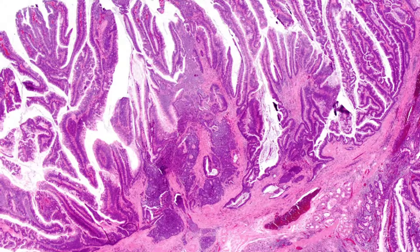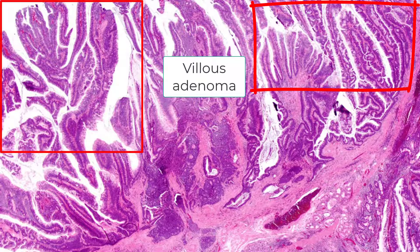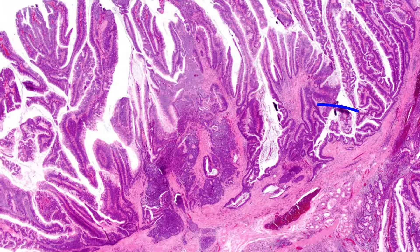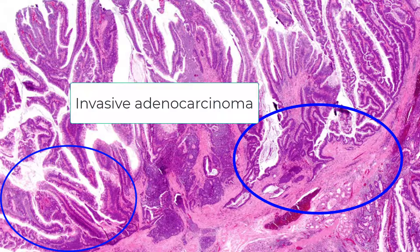Here's a very low-power view. That stuff there looks like a villous adenoma, doesn't it? But how about this stuff at the base? Look at those angulated glands — that's invasive adenocarcinoma.